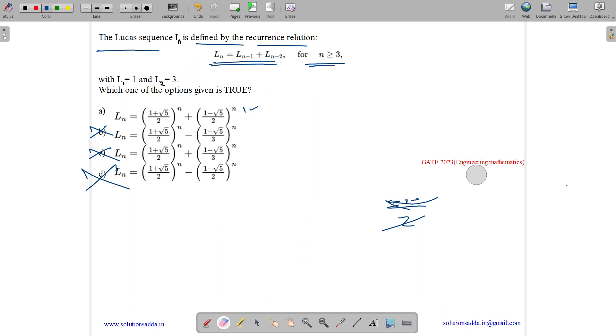Let us verify it for the first option for n equals to 2. So here we have 1 plus root 5 by 2 whole square plus 1 minus root 5 by 2 whole square.